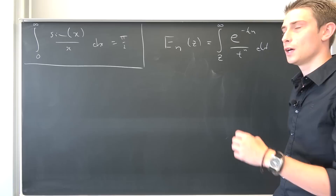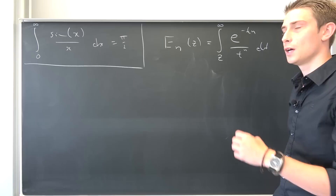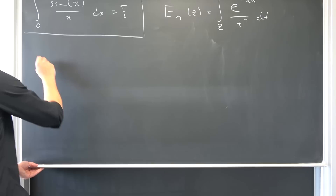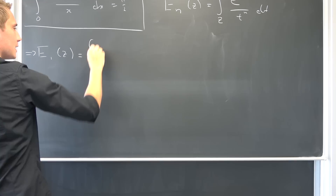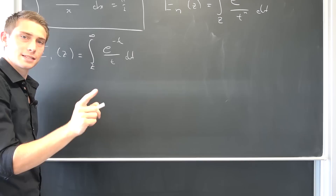That's the generalized version. Now we are going to deal with a special version that pops up a lot in many branches of mathematics. At first, I would like to set n equal to 1. E₁(z) is thus nothing but the integral from z to infinity of e to negative t over t dt. This does look better. Maybe you have seen this before — it really plays a huge role in mathematics.